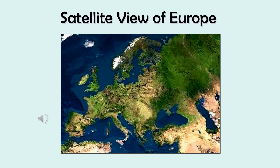Going straight south, you have what looks like a boot — that is the Italian Peninsula. Directly to the west of the Italian Peninsula is the Iberian Peninsula, where the countries of Spain and Portugal are located. Then if you go directly to the east from the heel of the boot, you go into the Balkan Peninsula. Those are the major peninsulas on the European landmass.